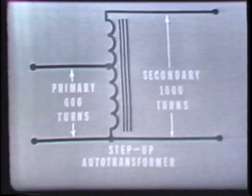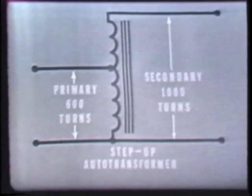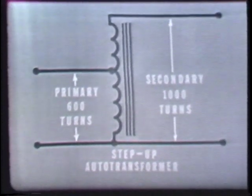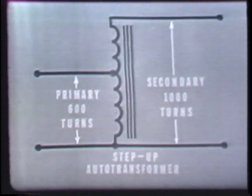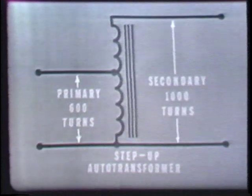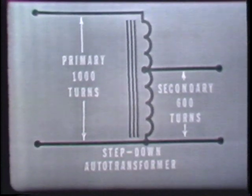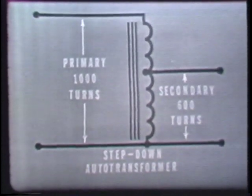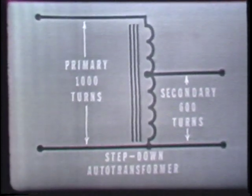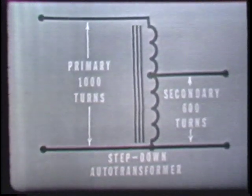A special type of transformer which uses only one winding for both the primary and the secondary coils is the auto transformer. An auto transformer can be used either as a step-up or as a step-down transformer. When used as a step-up transformer, all of the primary winding is part of the secondary winding. Here, the winding has a total of 1,000 turns: 600 serve as the primary while the entire 1,000 turns serve as the secondary. When used as a step-down transformer, all of the secondary winding is part of the primary winding — the entire 1,000 turns serve as the primary while only 600 serve as the secondary.